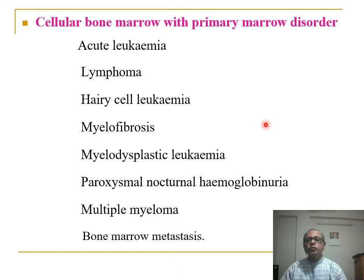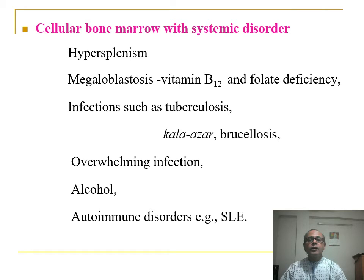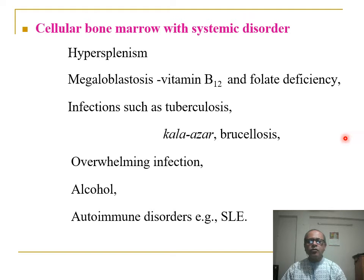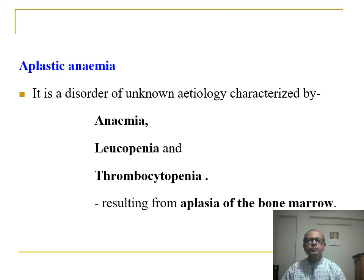Cellular bone marrow with primary marrow disorders such as acute leukemia, lymphoma, hairy cell leukemia, and myelofibrosis. Cellular bone marrow with systemic disorders such as megaloblastic anemia caused by vitamin B12 and folic acid deficiency, infections such as tuberculosis, collagen disorders, brucellosis, and overwhelming infections, alcohol, autoimmune disorders, and AIDS.